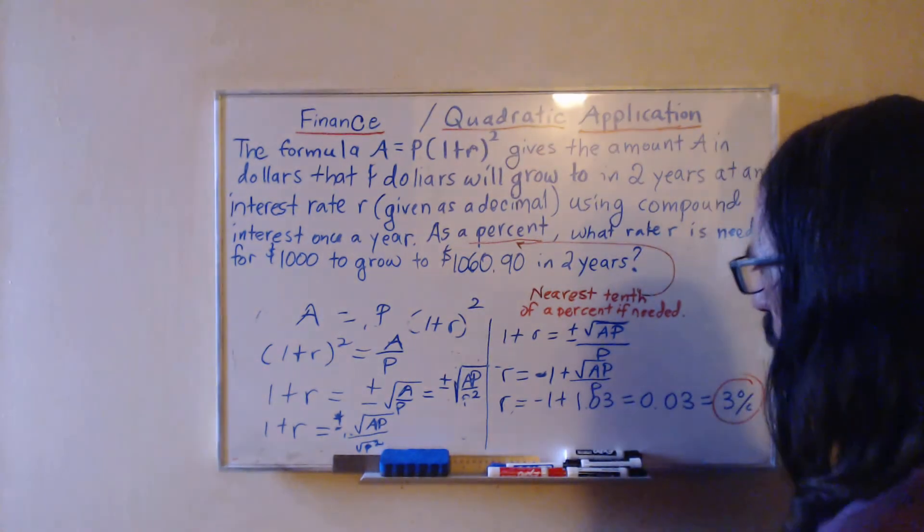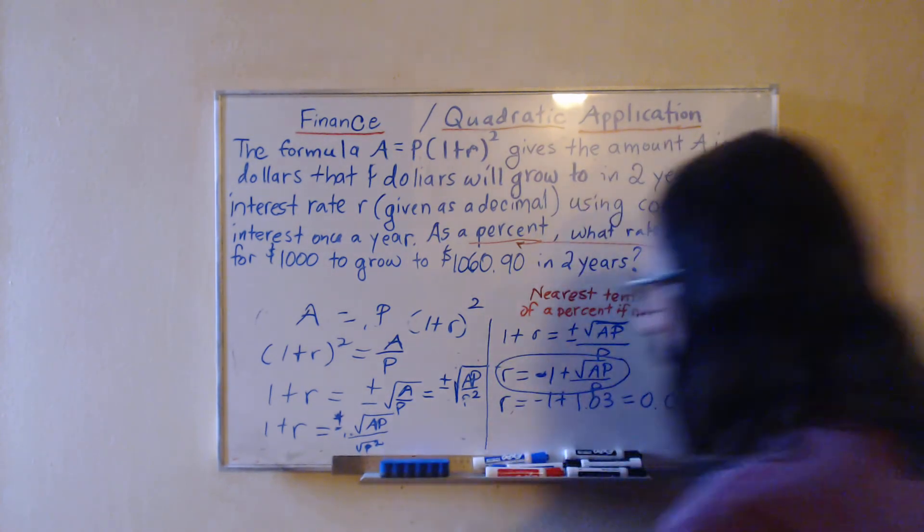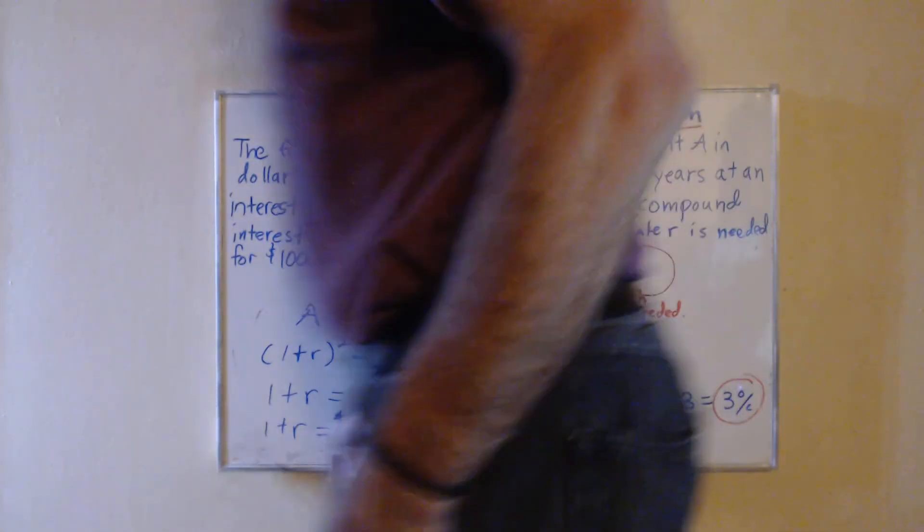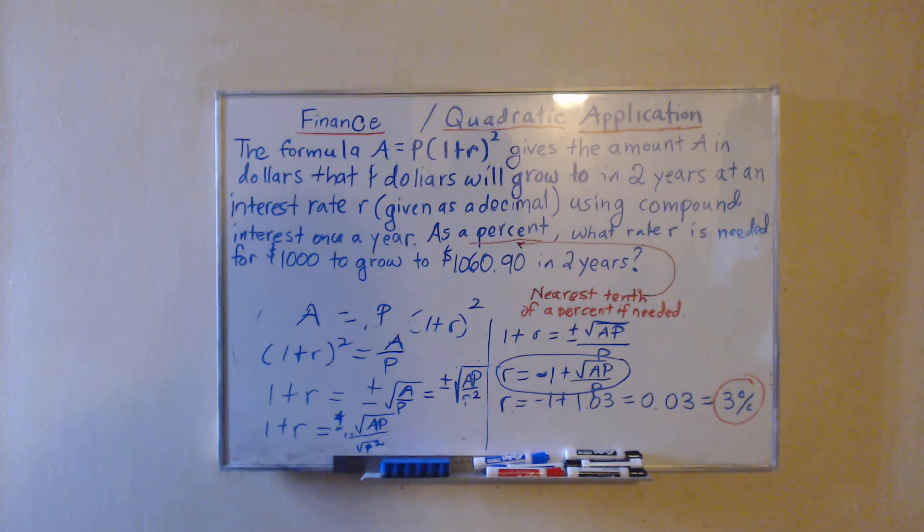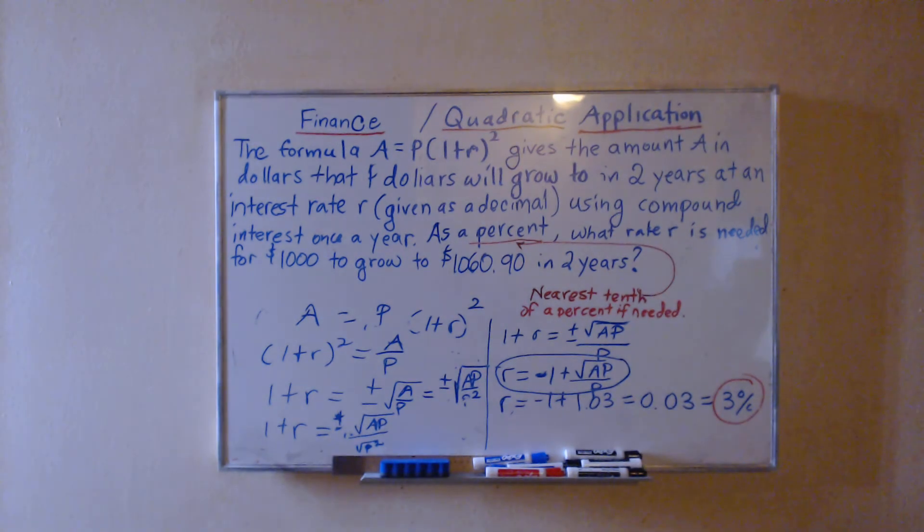I'm going to check this real quick myself. If I plug in the values of A and P that we had at the beginning, if I plug it into that rewritten formula, I should get 0.03 again. So that's going to be -1 plus the square root of 1000 times 1060.90, close the parentheses in the square root, and then divide that by the 1000 outside of the square root. And I do get the same thing.